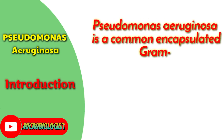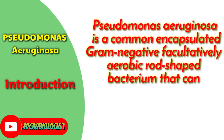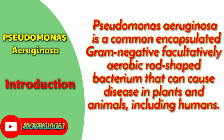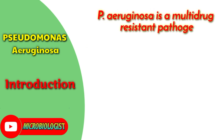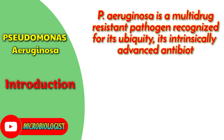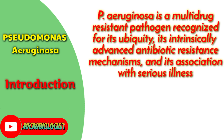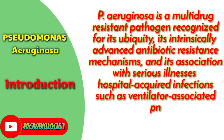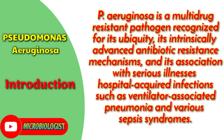Pseudomonas aeruginosa is a common encapsulated, gram-negative, facultatively aerobic, rod-shaped bacterium that can cause disease in plants and animals, including humans. P. aeruginosa is a multi-drug-resistant pathogen recognized for its ubiquity, its intrinsically advanced antibiotic resistance mechanisms, and its association with serious illnesses and hospital-acquired infections such as ventilator-associated pneumonia and various sepsis syndromes.